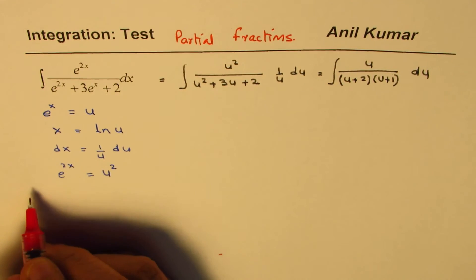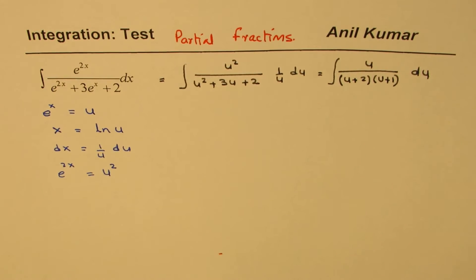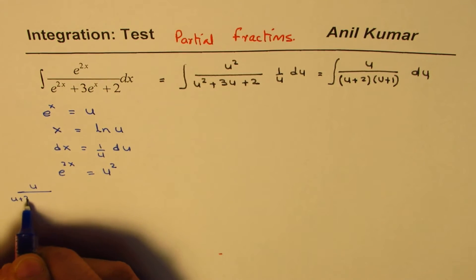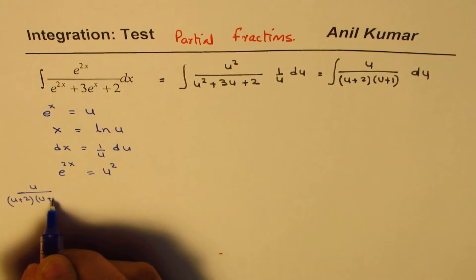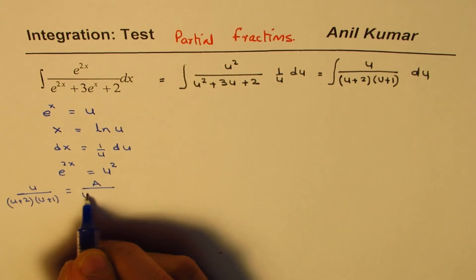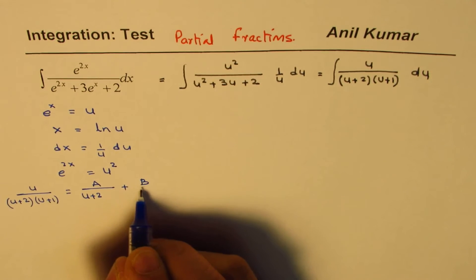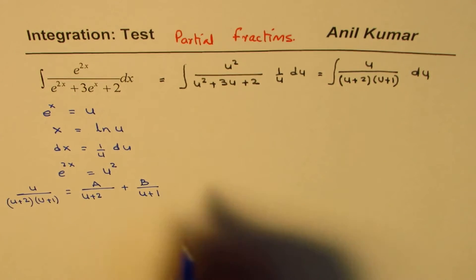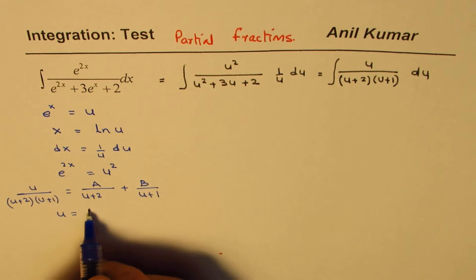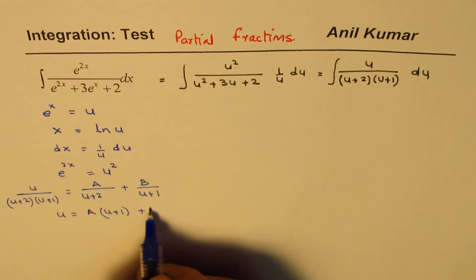So we can write all this, which is, let me rewrite. So we have u over u plus 2 times u plus 1, we could write this as A over u plus 2 plus B over u plus 1. Now, if I multiply both sides by u plus 2 times u plus 1, I get u equals A times u plus 1 plus B times u plus 2.